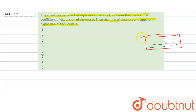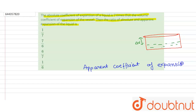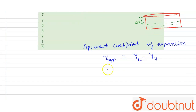There is air and the change in volume is delta V. So the apparent coefficient of expansion is: gamma apparent equals gamma_l minus gamma_v, where gamma_l is the coefficient of expansion of the liquid and gamma_v is the coefficient of expansion of the vessel. And in the question it is given that...